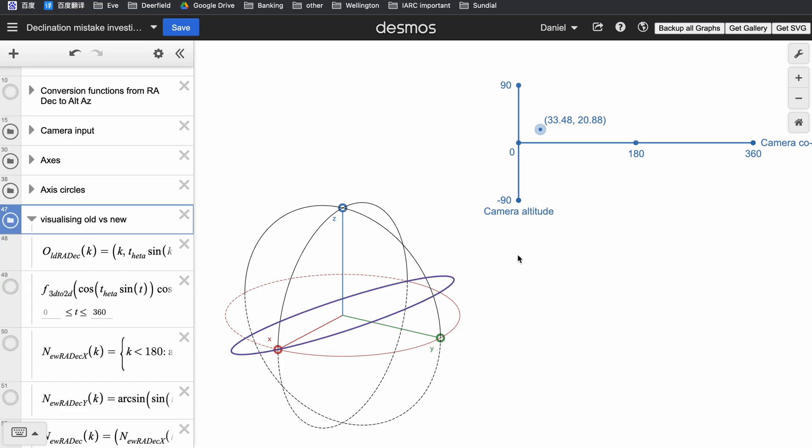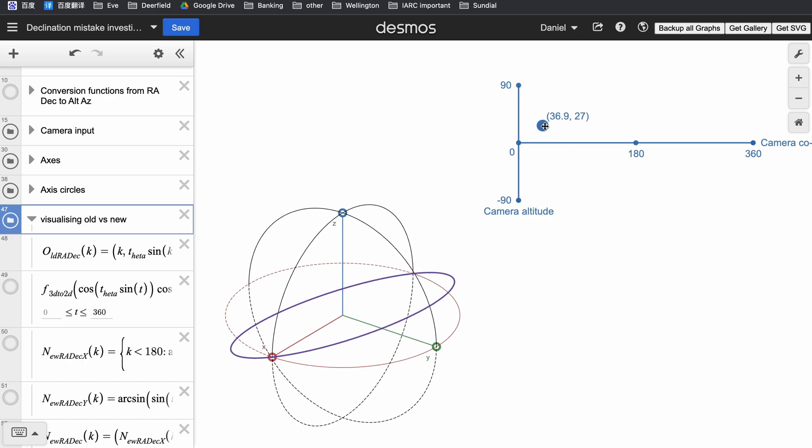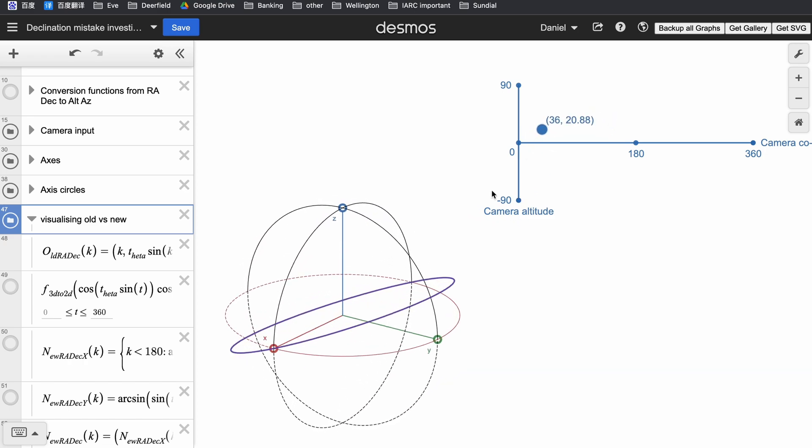For now, I will disable the green curve and just focus on the purple curve. What this purple curve is showing is the path of the sun around the sky throughout the year. Since this is right ascension and declination, this is first removing the effects of the daily spin of the earth, and just looking at the effects of earth's yearly orbit around the sun.